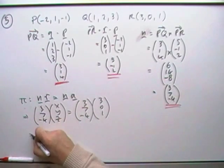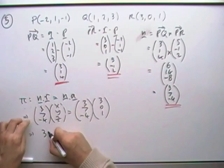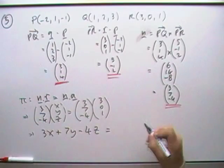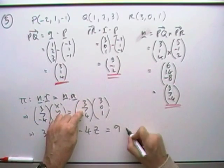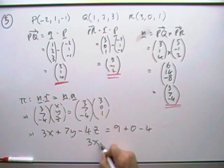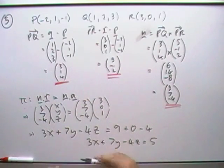So 3x plus 7y minus 4z is going to be 9 plus 0 minus 4. So in my Cartesian equation, the plane's going to be 3x plus 7y minus 4z equals 5.